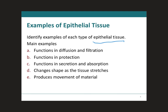Here are examples of the functions. It can either function to diffuse or filtrate, it can function as protection, it can function as secretion and absorption, it can function to change the shape of the tissue as it stretches, or it can function to produce a movement of a material. The key thing to think about is how simple and stratified epithelial tissue differ in terms of function, and what makes a difference between a squamous cell, which is flat, and a columnar cell, which is tall. These characteristics of the epithelial tissue tell you the function of each type of tissue.